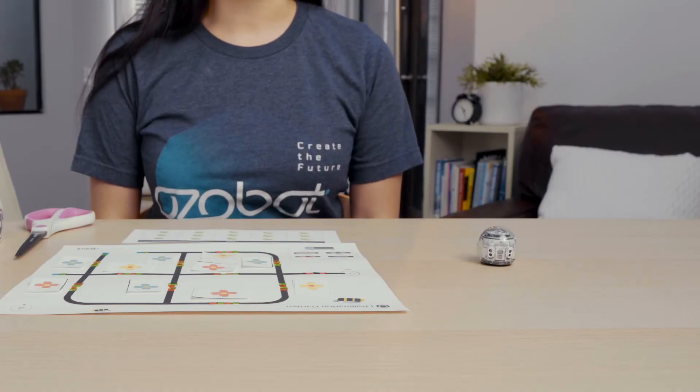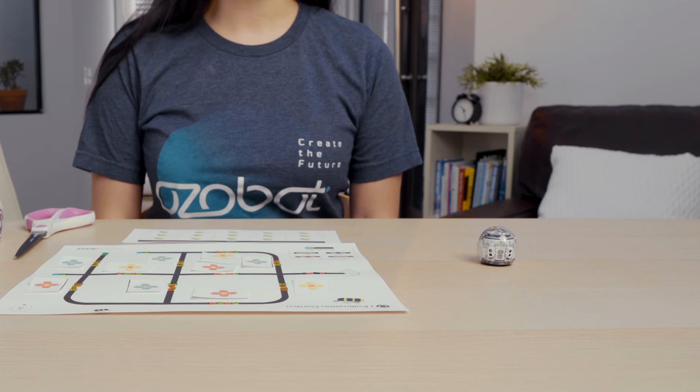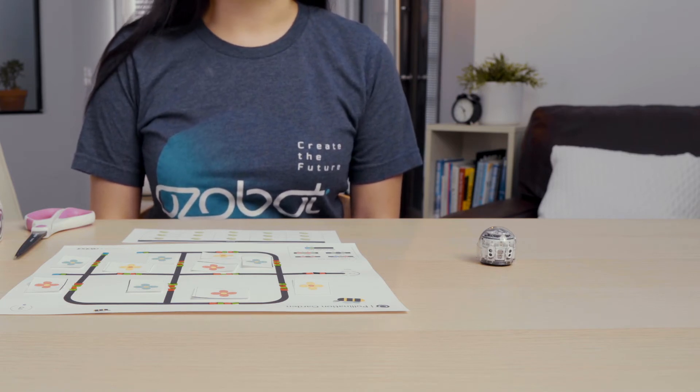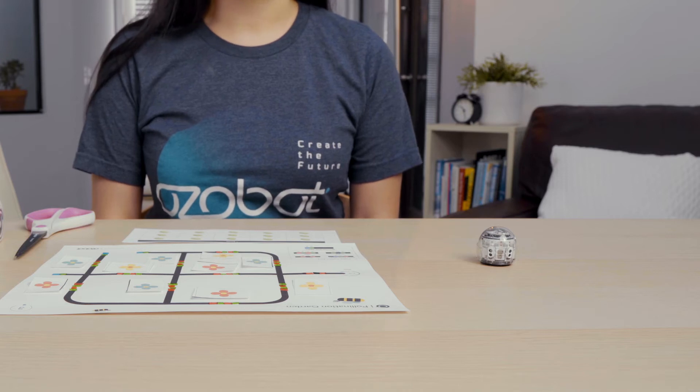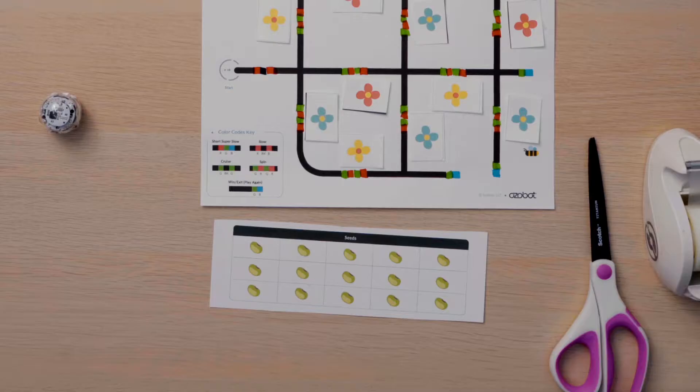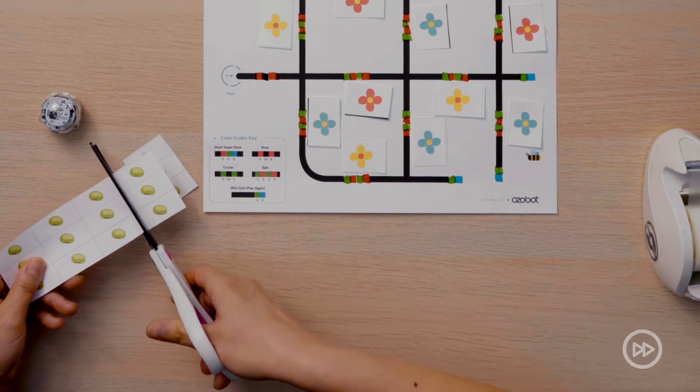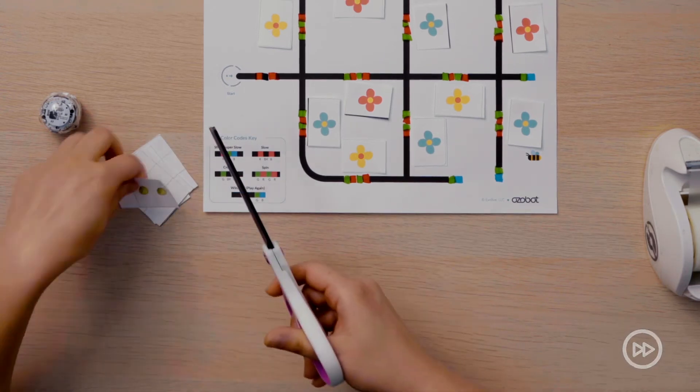When a pollinator takes pollen from one flower to another, a seed can form. You will use the seeds to mark which flowers were pollinated when your bot travels through the garden. Look back at your garden pieces sheet and cut out the seeds. I cut my seeds out and placed them in a neat pile like this.